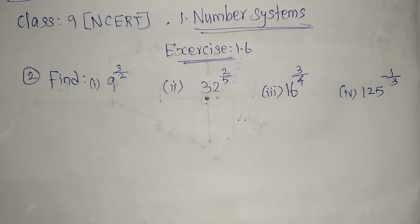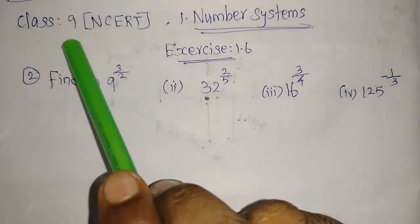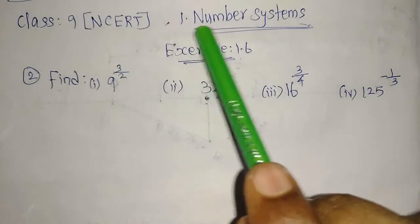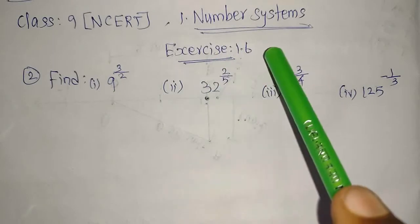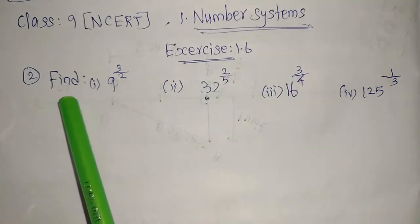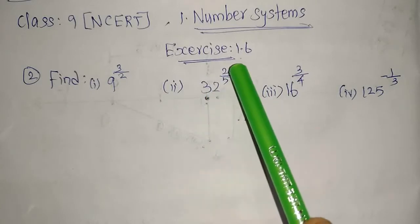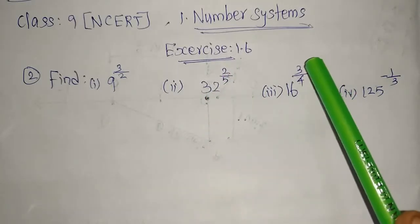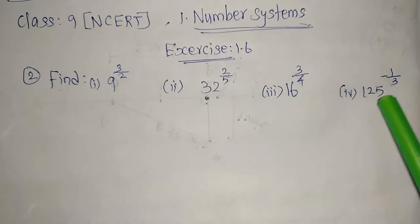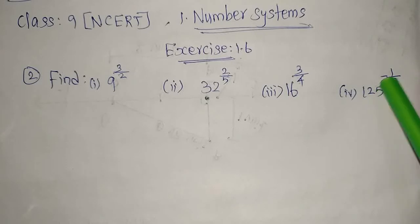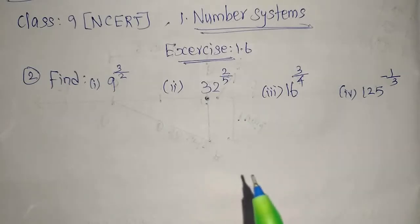Welcome to the channel. Today we will see Class 9 NCERT Chapter 1, Number System, Exercise 1.6. There are four questions: find 9 power 3 by 2, 32 whole power 2 by 5, 16 whole power 3 by 4, and 125 whole power minus 1 by 3. I will give an introduction to this exercise 1.6 first.